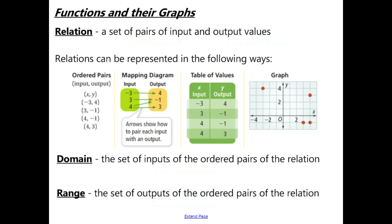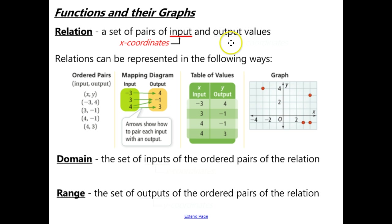A relation is a set of pairs of input and output values. We're pairing input values — those are our x-coordinates — and the output values are the y-coordinates.